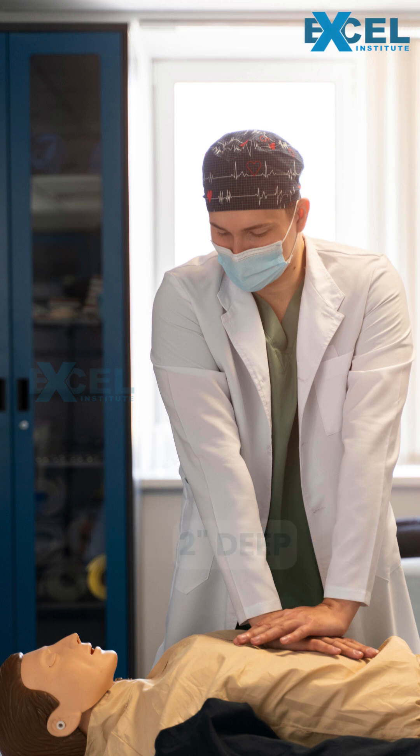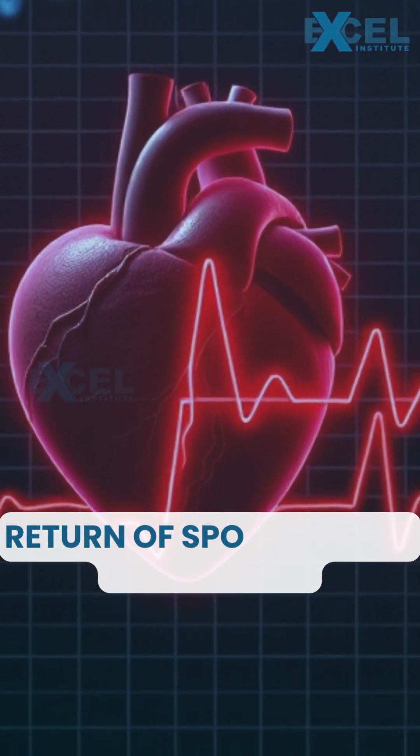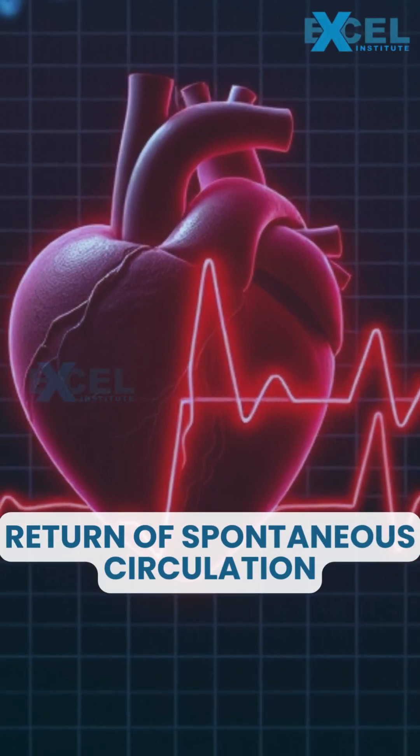You are going to give 30 compressions and 2 breaths, then 30 compressions and 2 breaths again — five times. When you do that, it makes approximately 2 minutes. Every 2 minutes you check whether ROSC has been achieved. ROSC is Return Of Spontaneous Circulation — meaning the pulse is back. You continue this process until you get the pulse.